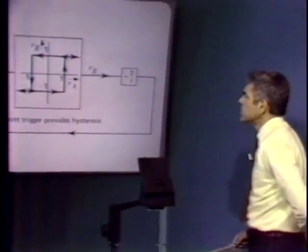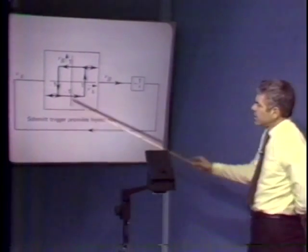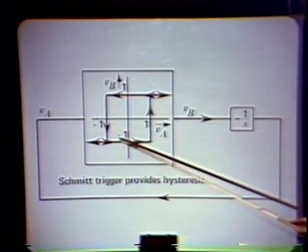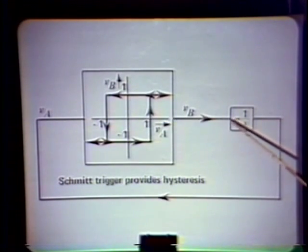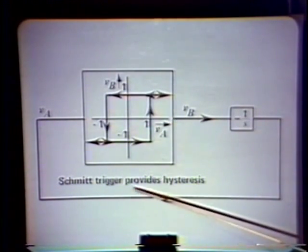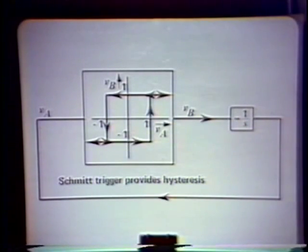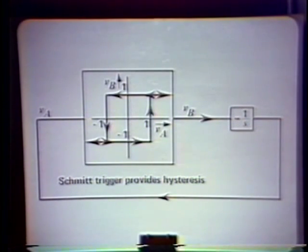There's a fairly popular circuit that's used for function generators, the sorts of equipment that one uses as signal sources in a laboratory very frequently. That technique is shown in the first viewgraph. What we do is take a Schmidt trigger — here I've shown one that's normalized — and combine it in a negative feedback loop, the inversion indicated here, with an integrator.